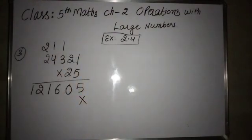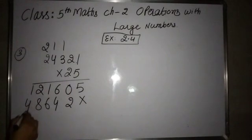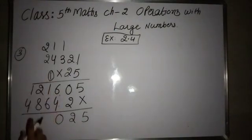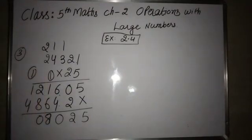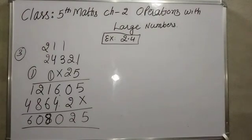Now multiplying by 2: 2 × 1 = 2, 2 × 2 = 4, 2 × 3 = 6, 2 × 4 = 8, 2 × 2 = 4. Now adding: 6 plus 4 = 10, 0 here with 1 carry; 6 plus 1 = 7, 7 plus 1 = 8; 8 plus 2 = 10, 0 here with 1 carry; 4 plus 1 = 5, 5 plus 1 = 6. So the answer for 24,321 multiplied by 25 — that is added to itself 25 times — is this.